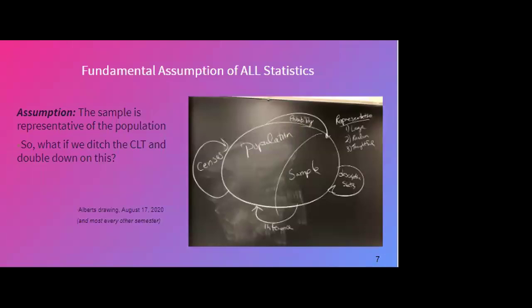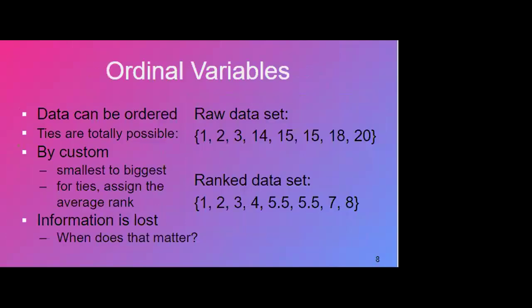So what helps us with this is the idea that we're assuming that the sample is like the population. Now, I drew this in class just the other day, but it's true, I draw it in almost every class I teach. But this idea that we always assume that the sample looks like the population, and if we don't, we got bigger trouble to worry about. So what we do is we think about ordinal variables.